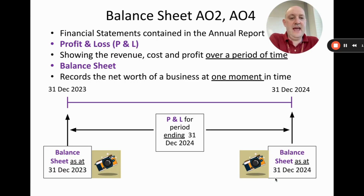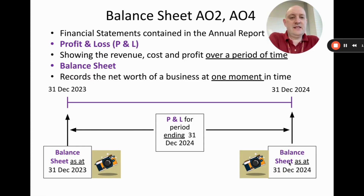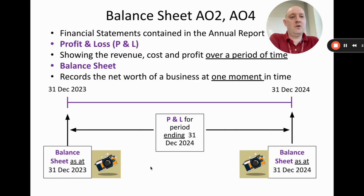We could do the value of the business again as at the end of December 2024, giving us two valuations. In theory, a business could value itself every single day, but that would be very time consuming, so usually this is done once a year formally. During that year, the profit and loss shows profitability over the period. These two are linked: if the business is profitable, the value on the balance sheet will go up.